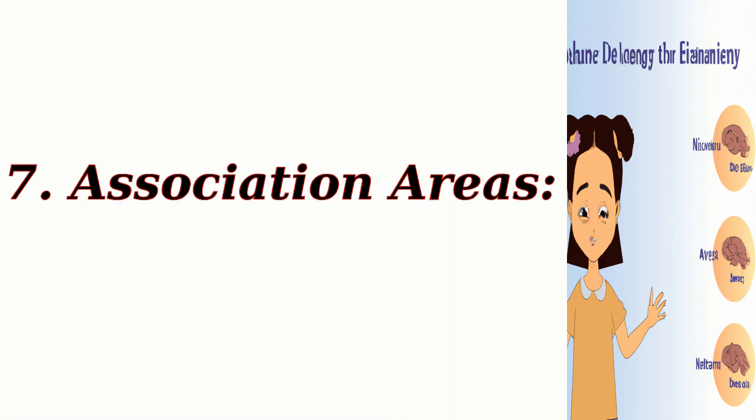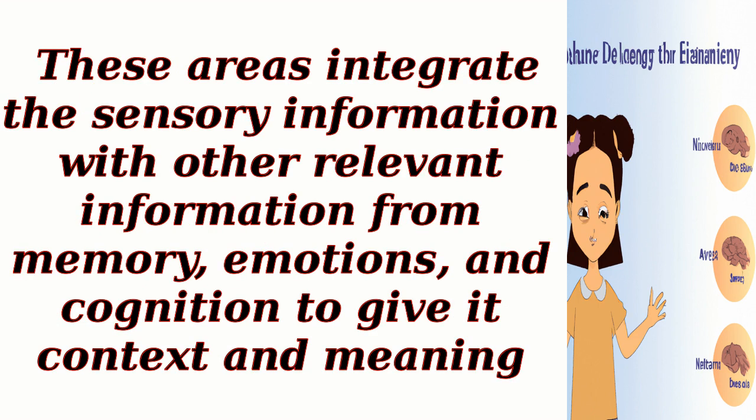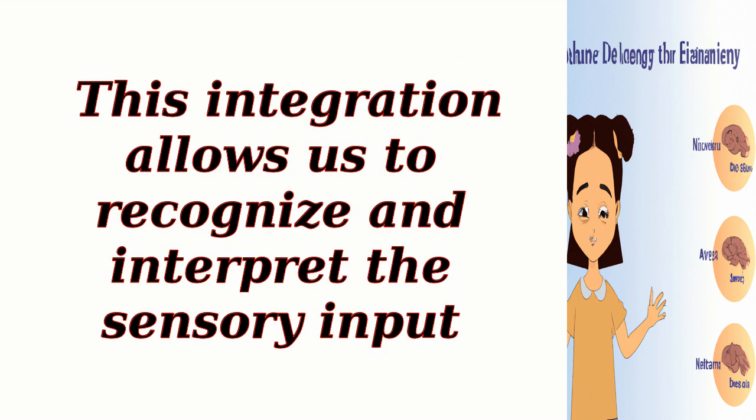7. Association Areas. After initial processing in the primary sensory cortex, the sensory information is passed on to higher-level association areas of the cerebral cortex. These areas integrate the sensory information with other relevant information from memory, emotions, and cognition to give it context and meaning. This integration allows us to recognize and interpret the sensory input.